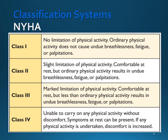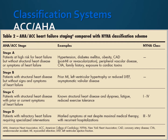The New York Heart Association classification has four classes, from no limitations to slight limitations to marked limitations to unable to carry on physical activity without discomfort. The American College of Cardiology and AHA has four stages: patients who are at high risk but without structural heart disease, patients with structural heart disease but without symptoms, and then patients with refractory heart failure requiring special interventions.